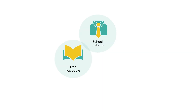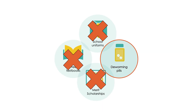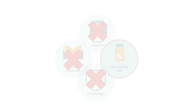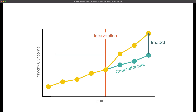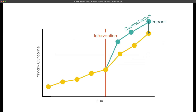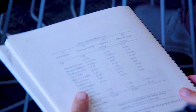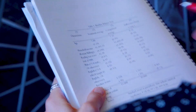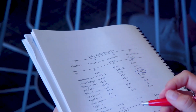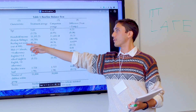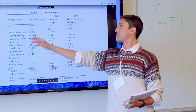How should we choose between several potentially good solutions? And having chosen one solution, how do we know whether it really works or not? That is, what is its true impact? In this course, we will learn how randomized evaluations can be used to rigorously measure social impact and how findings can inform evidence-based policies and programs.